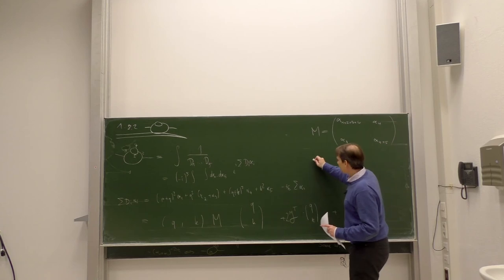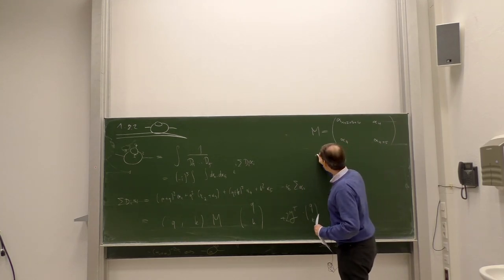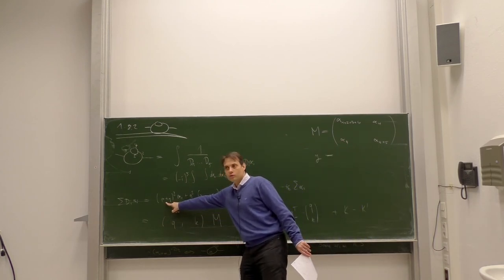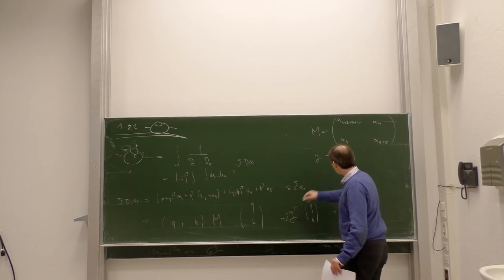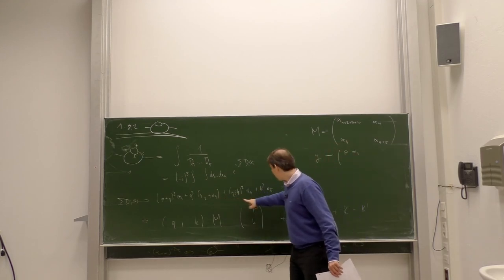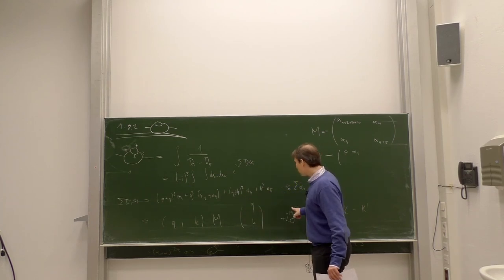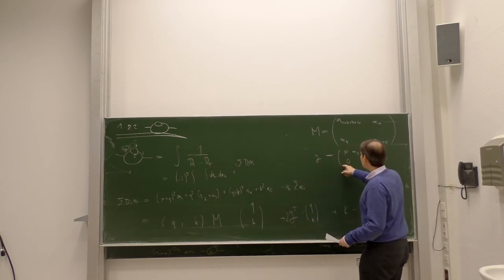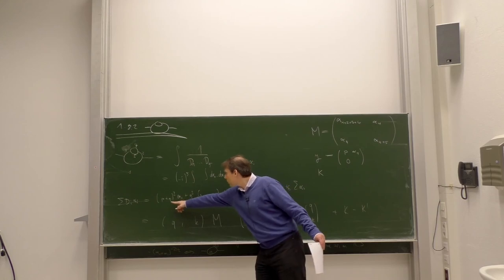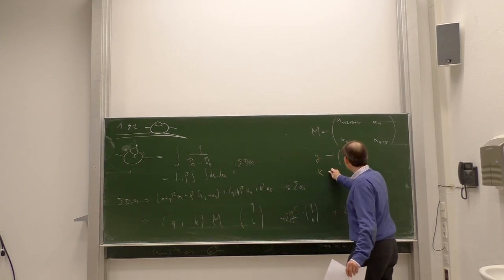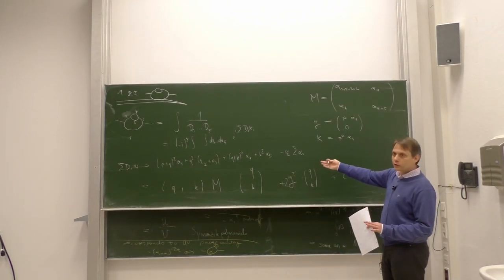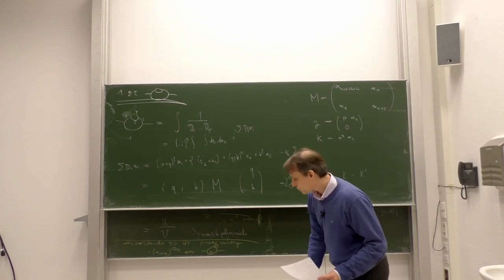That is the matrix of this quadratic form in the loop momentum. The linear term J: the only linear term in loop momentum is p·q times 2α₁, so J is just p·α₁. The constant K is p²·α₁ and nothing else. In this way we have already written our integral as a quadratic form in the loop momentum.